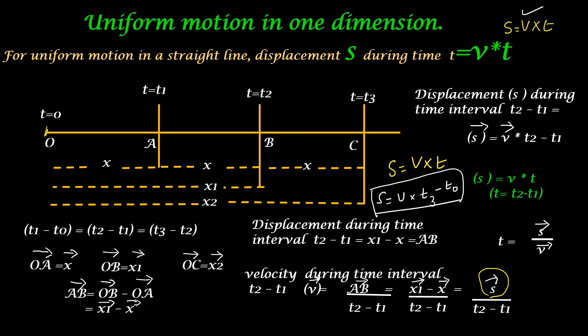T is the total time taken. T0 is the initial time, so S equals V multiplied by total time taken. I hope you now understand how we got the formula S equals V multiplied by t and what its benefit is. Please remember this formula is for uniform motion in one dimension.